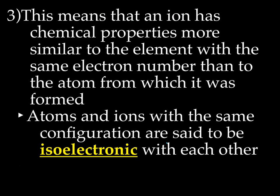Remember that an atom is gaining or losing electrons, so it's going to have a different configuration because it has a different number of electrons. It turns out that an ion's properties are more similar to the element with the same electron number than to the atom from which it was formed. For example, if sodium lost an electron, it would now have a configuration like neon, and sodium ion acts more like neon than it acts like sodium. We have the term isoelectronic — meaning an atom and an ion with the same electron configuration — and we'll talk about that more in a few minutes.